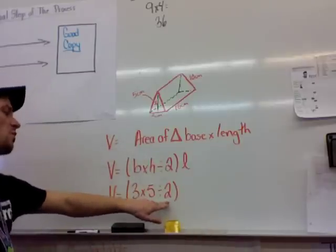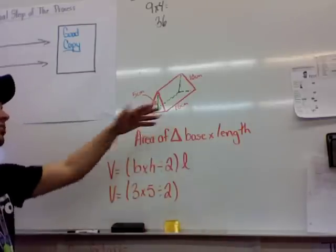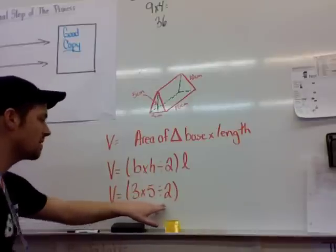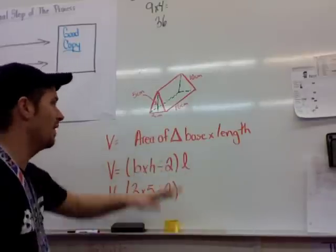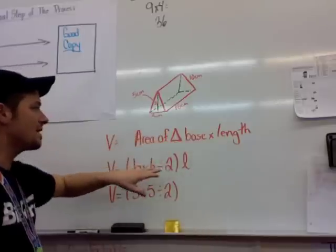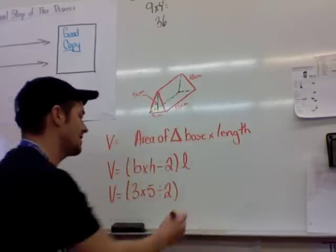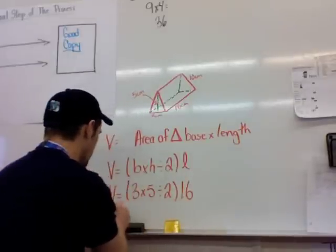Remember, we divide it by 2 when we're finding the area of a triangle because a triangle is half of a rectangle. All right? So base times height divided by 2 multiplied by the length back. So basically, the number of these triangles that go back to fill out the shape, which is 16 cm.